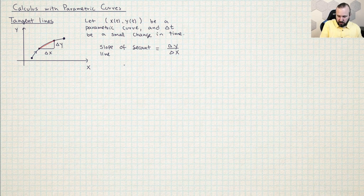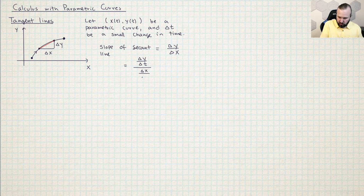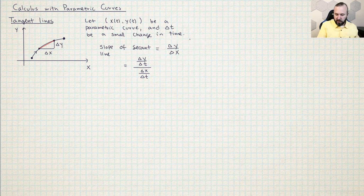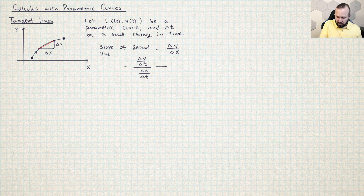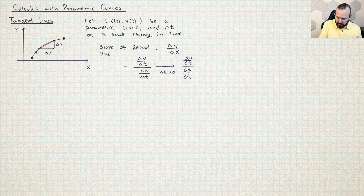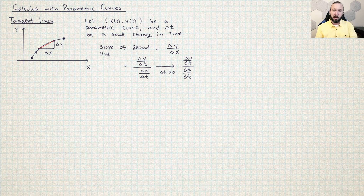What we can do is multiply top and bottom by one over delta t, giving delta y over delta t divided by delta x over delta t. All I did was multiply the top and the bottom by one over delta t, so I didn't change the value. As delta t approaches zero, the limit of this becomes dy/dt over dx/dt. So this gives us a formula for the slope of the tangent line.